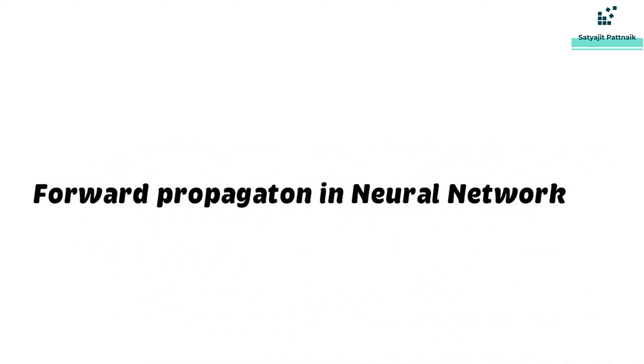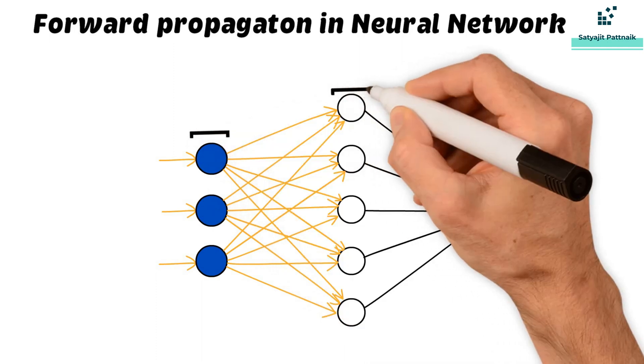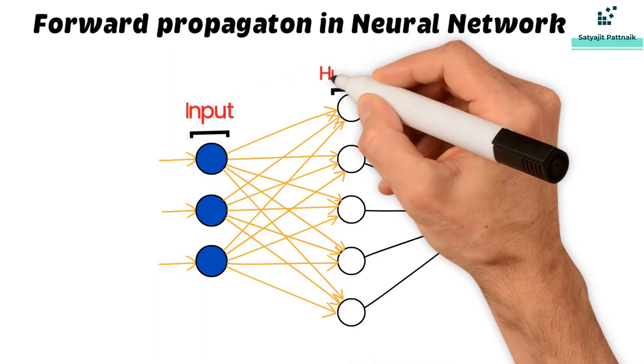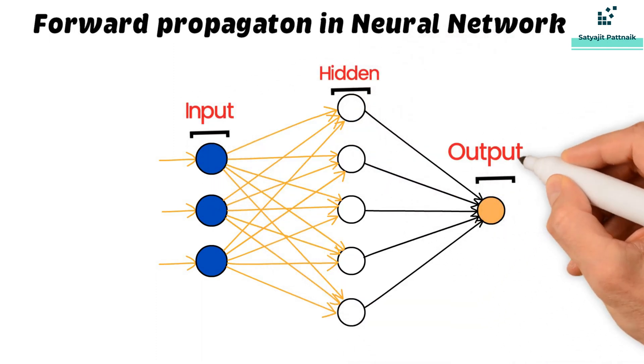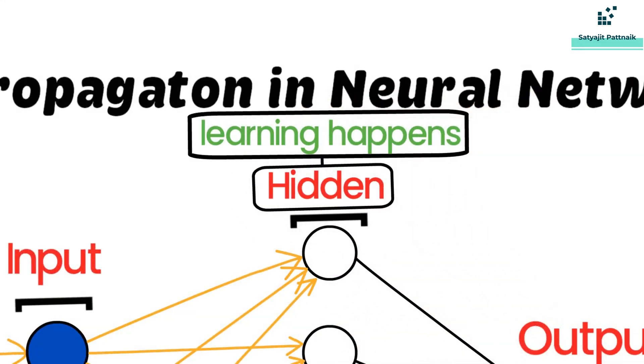Let's learn about forward propagation in neural networks. We have three layers in a neural network: input, hidden, and output. The hidden layer is the layer where the learning happens.